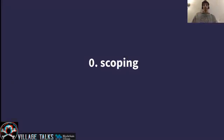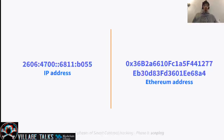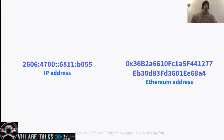Let's talk about scoping. If you come from the application security world or maybe doing pen testing for infrastructure exposed on the internet, you might be familiar with the fact that you have IP addresses when scoping your work — you will be given IP addresses that help you understand the systems you are about to audit or assess. In the Ethereum case, we also have addresses. In this case, we have Ethereum addresses. I know they are not the same, but the idea is to start drawing some parallels between the worlds.